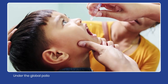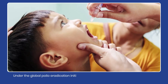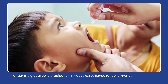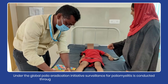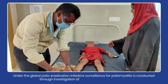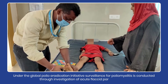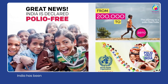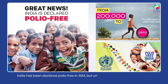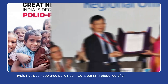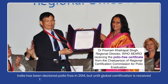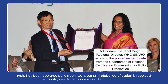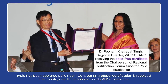Under the Global Polio Eradication Initiative, surveillance for poliomyelitis is conducted through investigation of acute flaccid paralysis cases. India has been declared polio-free in 2014. But until global certification is received, the country needs to continue quality AFP surveillance.